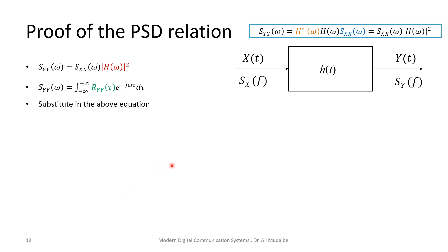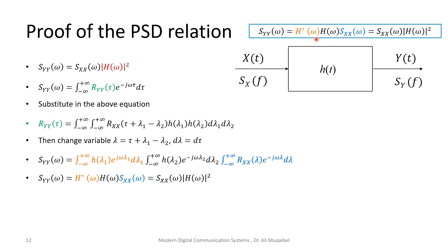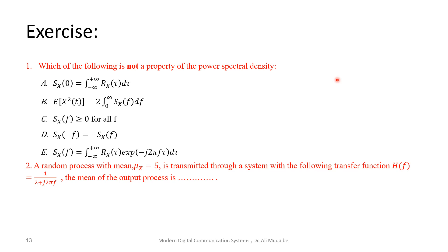A proof of the output PSD relation S_Y(f) = S_X(f)·|H(f)|² is provided for reference — you can pause the video to review it. It's important to note but not a main target for this course; we just need to use the final relation. To challenge you: which of the following is not a property of the power spectral density? Also, given an input mean and a transfer function, what is the mean of the output process? Please write your answers in the comments and see you in the next video.